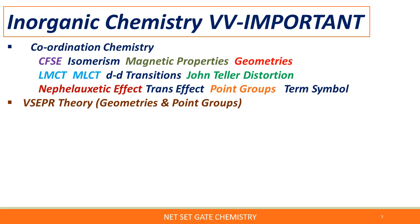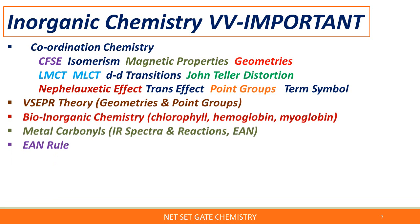Trans effect, point groups, and term symbols are very very important points in coordination chemistry. Based on this topic alone, they ask at least four marks in GATE and six to eight marks in the CSIR NET exam. VSEPR theory — valence shell electron pair repulsion theory — geometries and point groups based on this theory will be asked. In bioinorganic chemistry, chlorophyll, hemoglobin, and myoglobin topics are supposed to be covered.